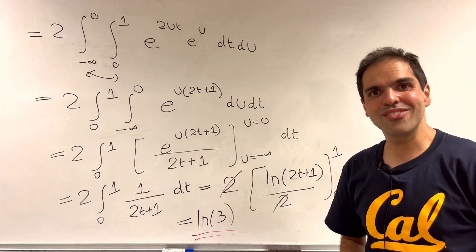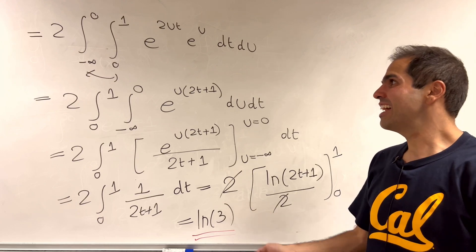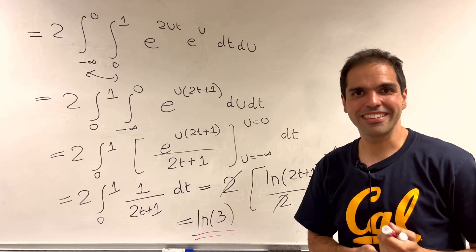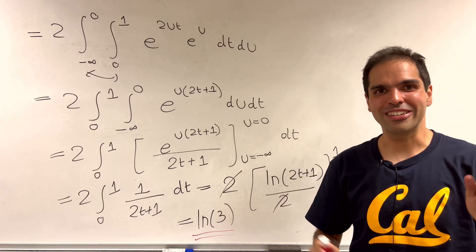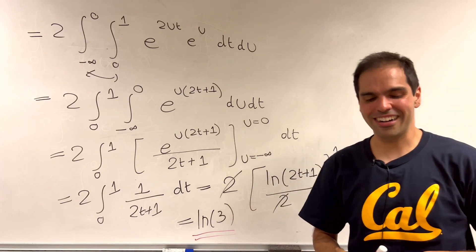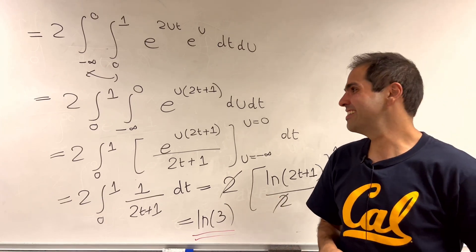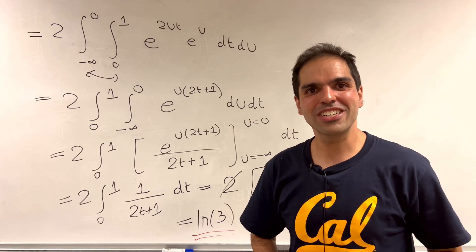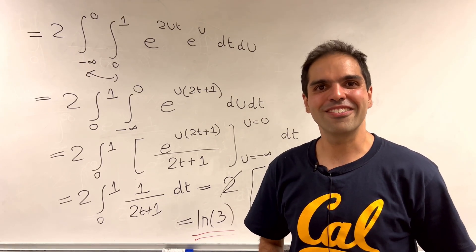And here's my question for you, which method do you like more? The Feynman technique method or the u-sub method? I kind of like both of them, it's like choosing between chocolate and vanilla ice cream. I hope you like this, if you want to see more math please make sure to subscribe to my channel. Thank you very much.